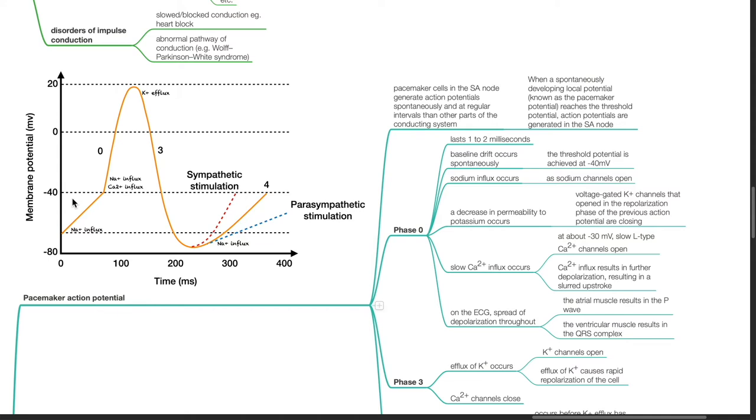Calcium influx results in further depolarization resulting in a slurred upstroke. On the ECG, spread of depolarization throughout the atrial muscle results in the P wave and the ventricular muscle results in the QRS complex.